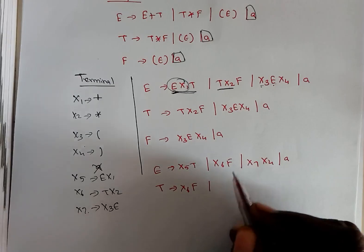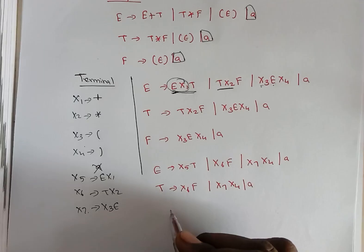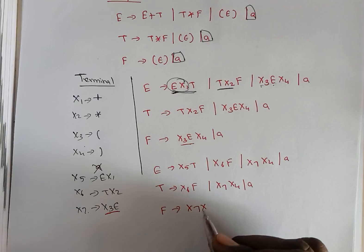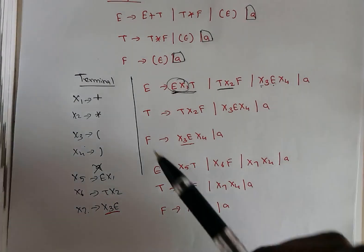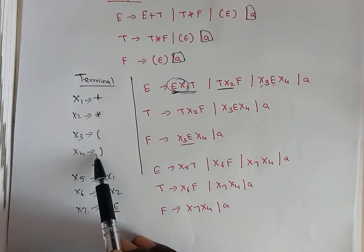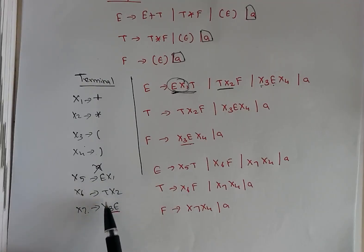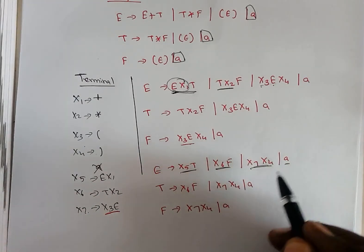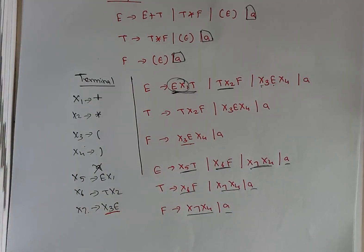For T's production, T x2 is already assigned as x6, so we write x6 F; and x3 E is assigned as x7, followed by a x4, and the single terminal symbol. For F's production, x3 E is substituted with x7 x4, followed by a single 'a'. Now finally, in all the cases we have a variable tends to single terminal symbol — allowed in the general format — or a variable tends to two variables, also allowed. All productions now have two variables or a single terminal symbol. This is the final grammar in Chomsky Normal Form format.